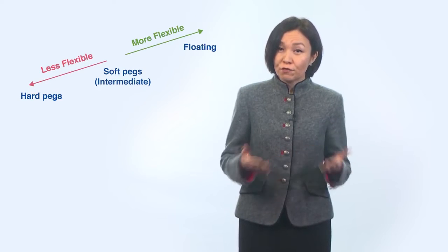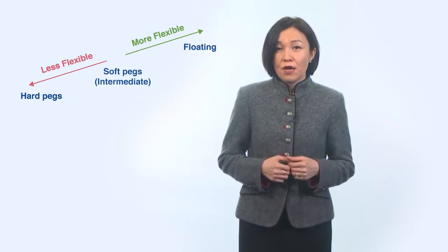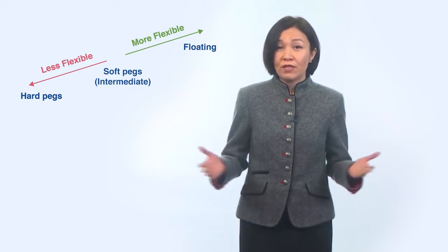Let's discuss another group of exchange rate arrangements. In the middle of the spectrum are soft exchange rate pegs. Soft pegs attempt to mix the stability of a peg and adjustment that come with floating rates. The mixing has been done in a variety of ways.